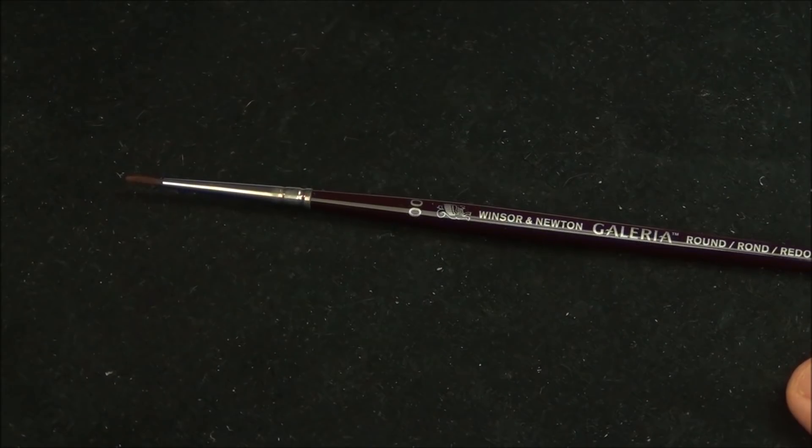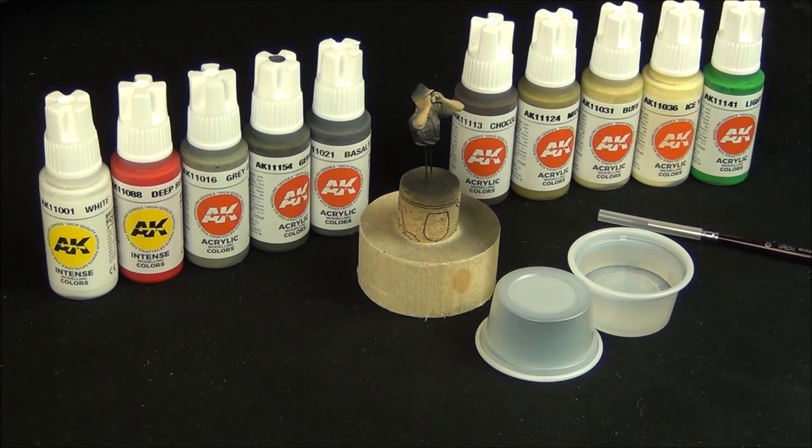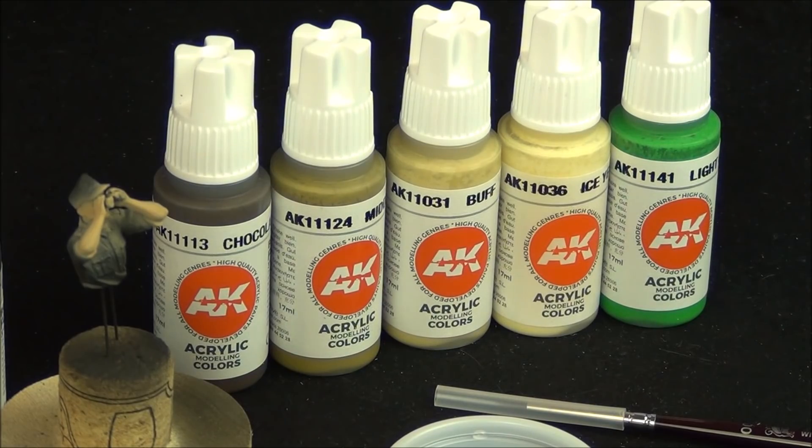For paint brushing I'm going to use this Winsor & Newton 00 round brush. It's not anything special. And then for the actual paint I'm going to use these brand new AK Gen 3 paints. They're really good for paint brushing. Now I don't have any precise colors so I'm going to have to mix this all up myself. Hopefully they have some paint sets that come out soon.